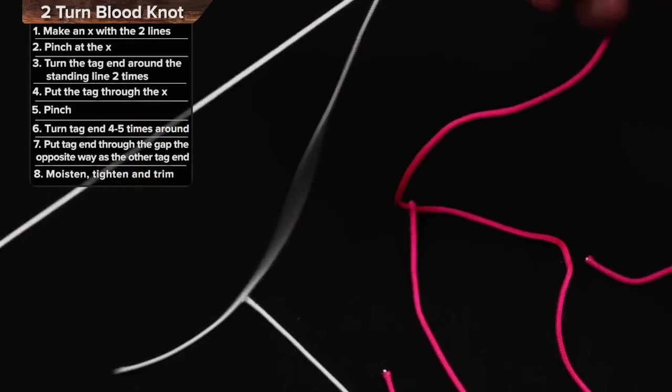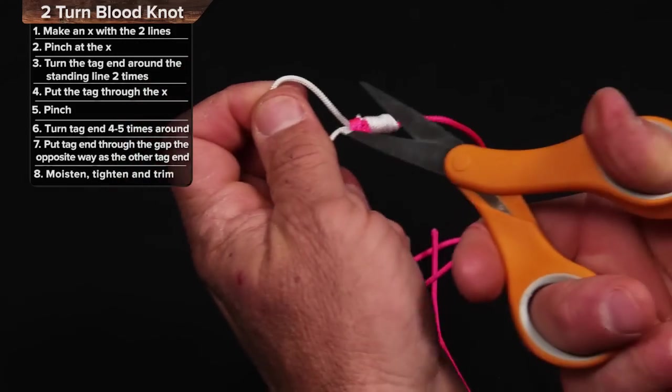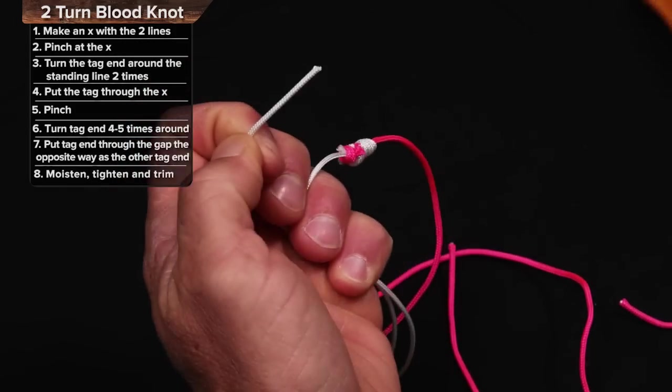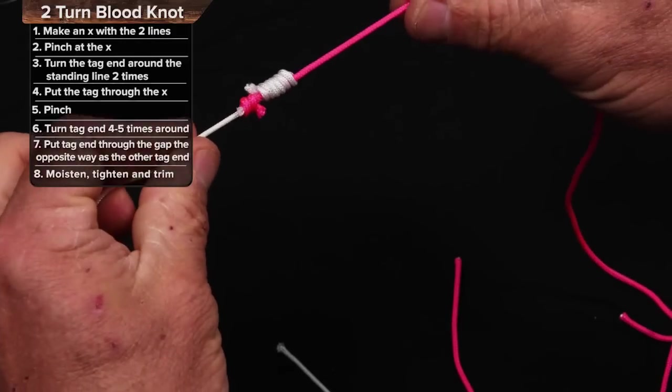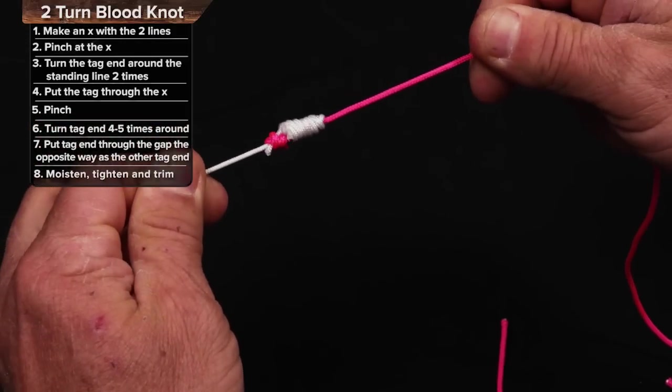I'll trim off all the tag ends of which I have three now. Two coming out of the knot and then I have another tag end here and that's a great knot for a tarpon leader. So that's the blood knot and the two turn blood knot.